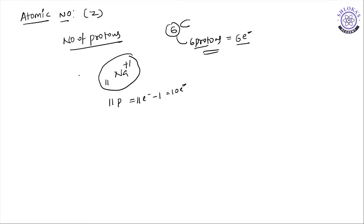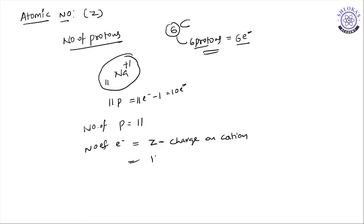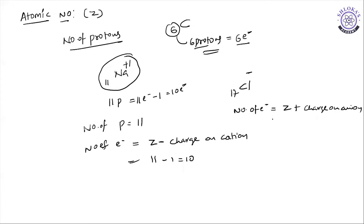For example, for the sodium-plus ion, number of protons is 11 and number of electrons equals Z minus charge on the cation: 11 minus 1 equals 10. For an anion like Cl⁻ with atomic number 17, number of electrons equals Z plus charge on the anion: 17 plus 1 equals 18 electrons in the Cl⁻ ion.